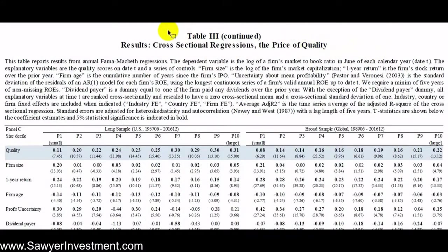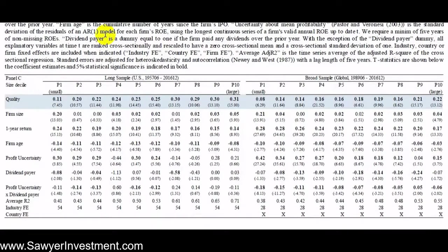To understand how company size affects the relationship between quality and price, the authors split companies into size deciles — larger companies in P10, smaller in P1 — and run the same regression. In larger companies, the price-to-book ratio is more affected by company quality than in smaller companies. Quality still holds a significant coefficient for smaller companies, so it matters somewhat, but not as much as it does for larger companies. Higher quality large companies tend to garner a larger price-to-book ratio than do smaller companies.